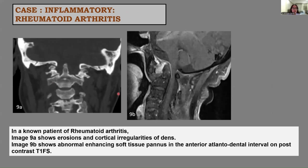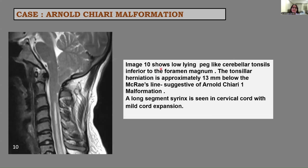Next is a 55-year-old female, a known case of rheumatoid arthritis with neck pain. Image 9A shows erosions and cortical irregularities of the dens. Image 9B shows abnormal enhancing soft tissue pannus in the anterior atlanto-dental interval on post-contrast fat-saturated images. In such cases, MRI is needed to evaluate soft tissue abnormalities. This was also a case of Arnold Chiari malformation with low-lying peg-like cerebellar tonsils inferior to the foramen magnum; tonsillar herniation was 13 mm below McRae's line, suggestive of Arnold Chiari type 1 malformation, with a long-segment syrinx in the cervical cord and mild cord expansion.